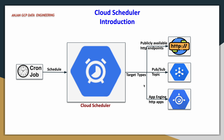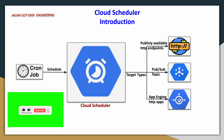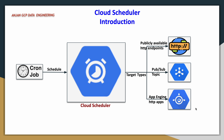The third target type is App Engine HTTP applications. App Engine is a scalable service where you can host your web applications and quickly create and deploy them. We will talk about this service in later videos.